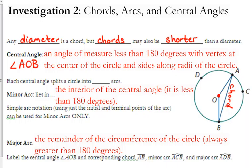Now, each central angle splits your circle into two arcs. We call them the minor arc and the major arc. The minor arc is on the inside of the central angle, meaning that it's less than 180 degrees.